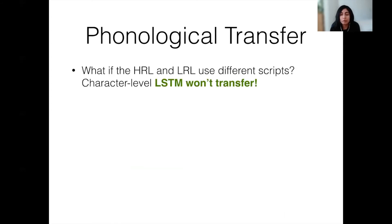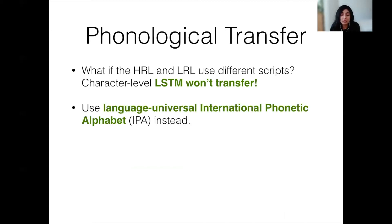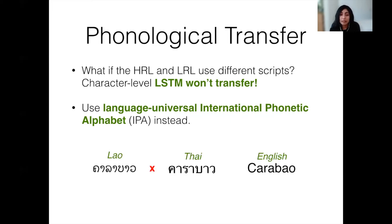Finally, although languages might be very closely related, they could use different alphabets or writing systems. In this case, our character-level LSTMs won't transfer across the languages. For such cases, we propose converting all the data to the phonological space to train the model using the International Phonetic Alphabet. This alphabet essentially expresses how the words are pronounced and can be used to represent speech in many languages. This is particularly useful for entity linking because names are often pronounced similarly across languages. For example, Thai and Lao are closely related languages but use different scripts, so we can't do zero-shot transfer with a character-level LSTM. However, if we train and test the model with data all converted to the IPA, we see that entities are indeed represented quite similarly in these two languages and zero-shot transfer can potentially succeed.